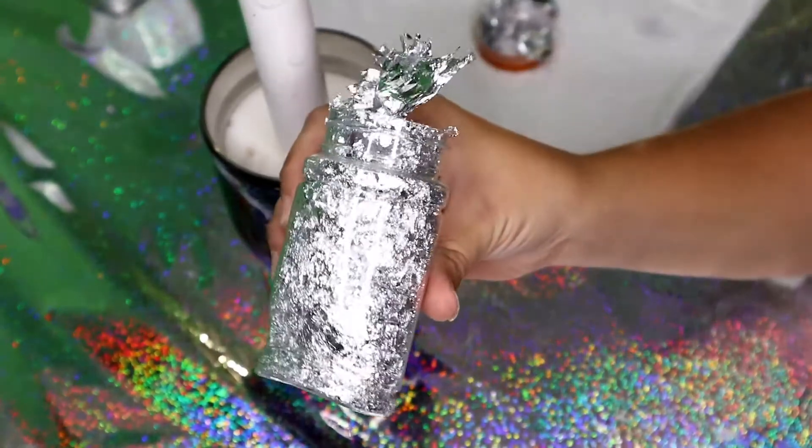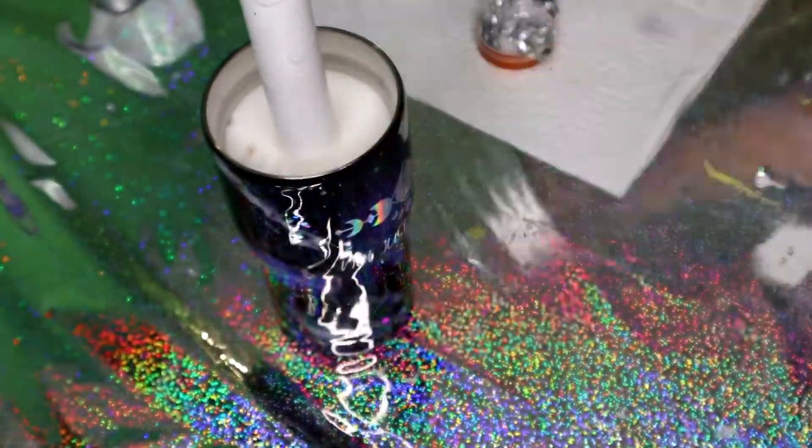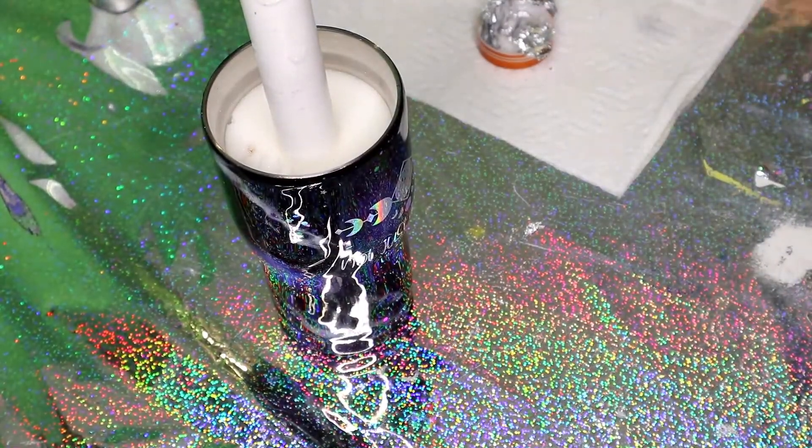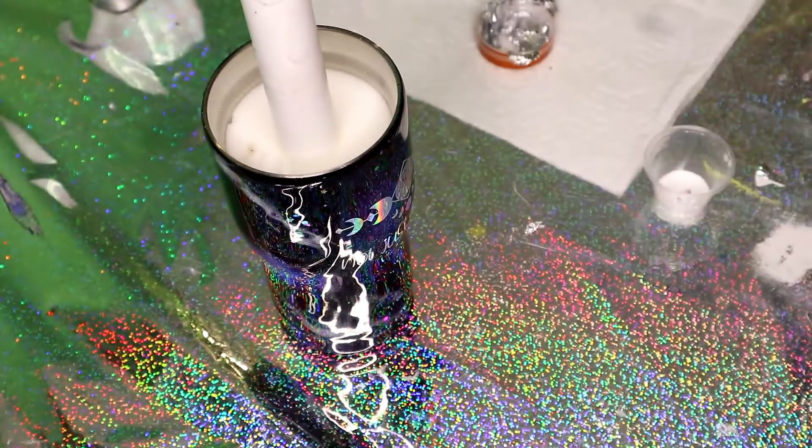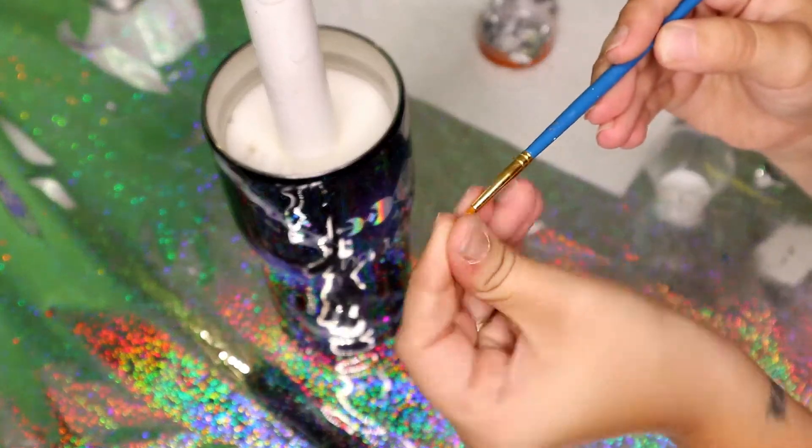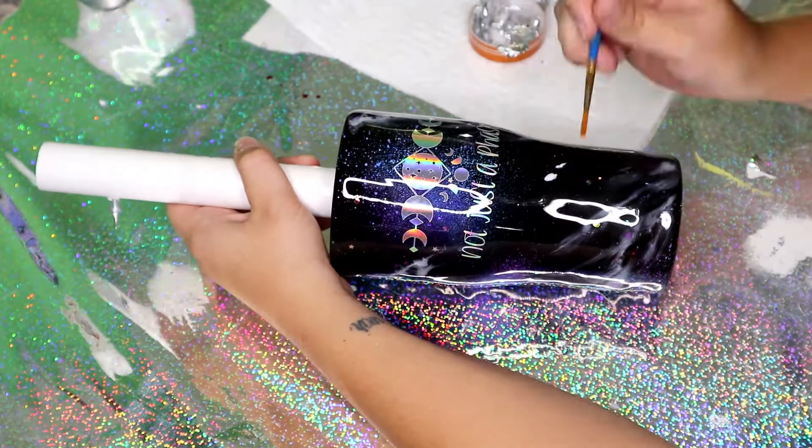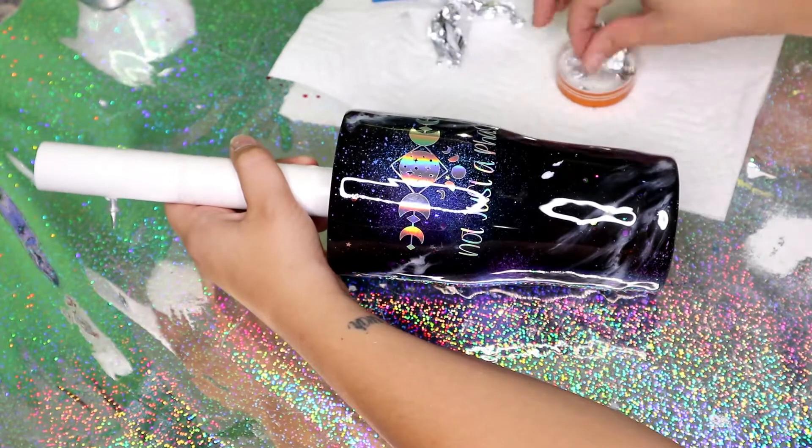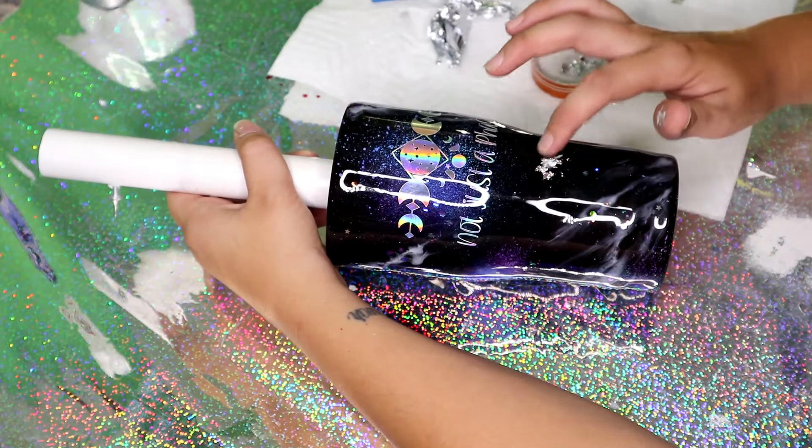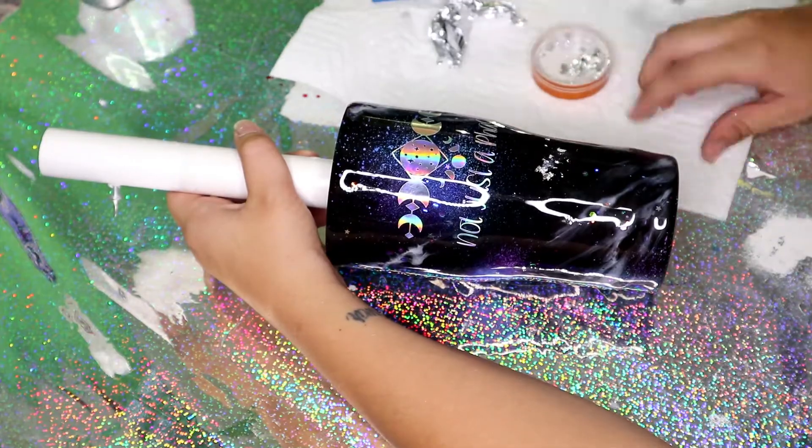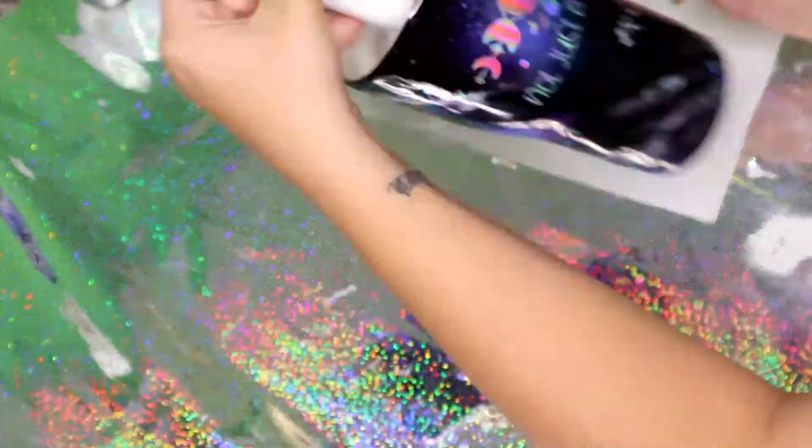After I added the decal, I decided I wanted to add another little element so I went in with some silver foil flakes. I got them from mycraftsource.com but you can get them pretty much anywhere. And I just took a thin little paint brush and dipped it in some Mod Podge in random spots and put that on the cup. It made it super pretty. I'm obsessed with foil flakes in any color so you're probably going to see me use them a lot here on my channel.